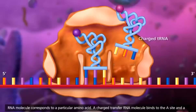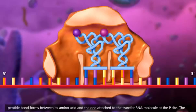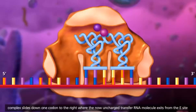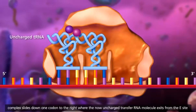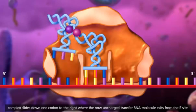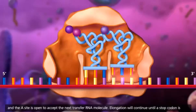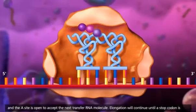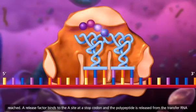A charged transfer RNA molecule binds to the A site and a peptide bond forms between its amino acid and the one attached to the transfer RNA molecule at the P site. The complex slides down one codon to the right where the now uncharged transfer RNA molecule exits from the E site and the A site is open to accept the next transfer RNA molecule. Elongation will continue until a stop codon is reached.